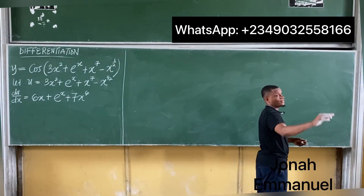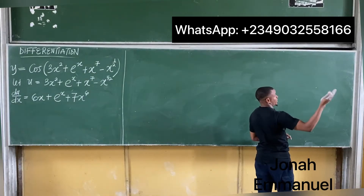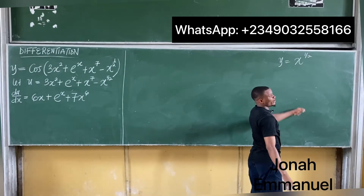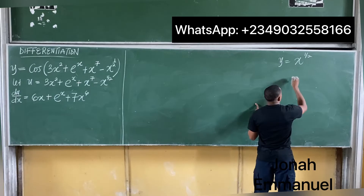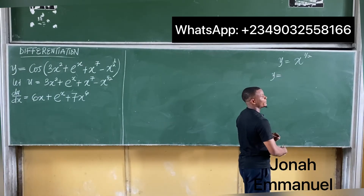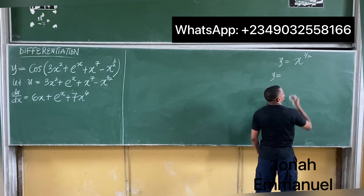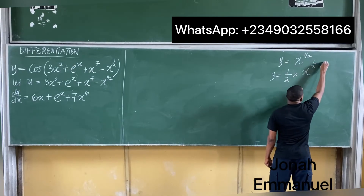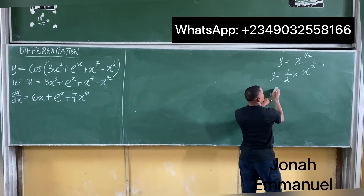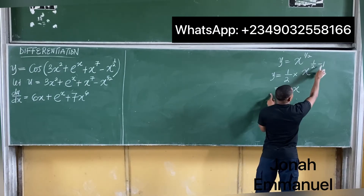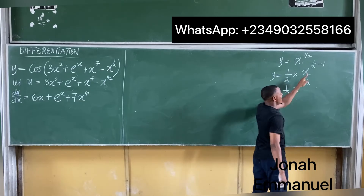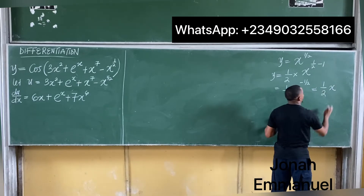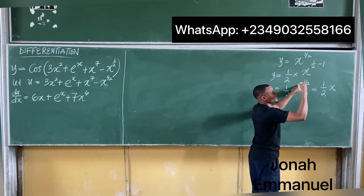Okay, let's see. y equals x to the power 1 over 2. Using the general method — the power rule — I bring down the power and subtract 1: that gives 1 over 2 times x to the power 1 over 2 minus 1. This equals 1 over 2 times x to the power negative 1 over 2, since half minus 1 is negative half.